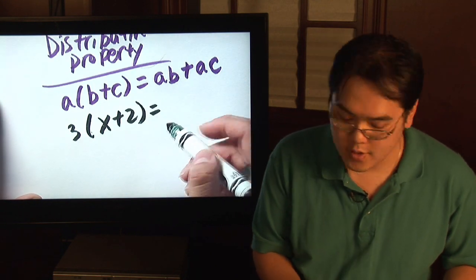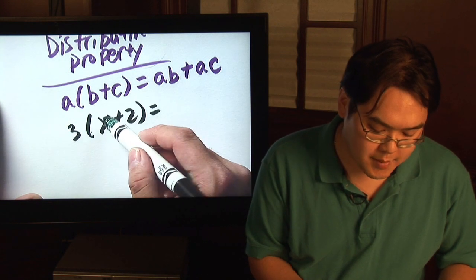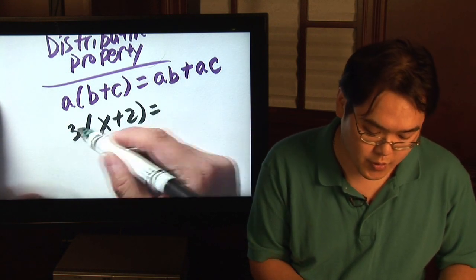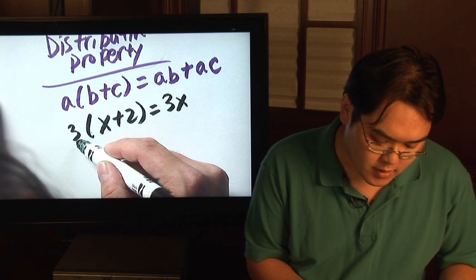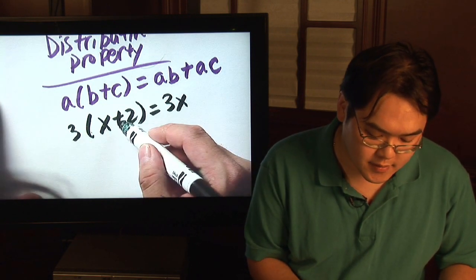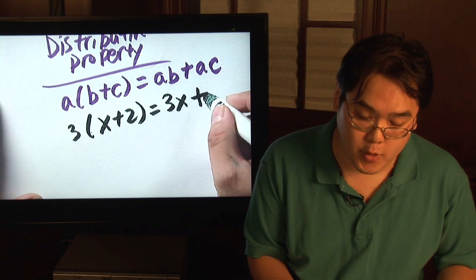So what that means here is 3 times x is what you do first. So 3 times x is 3x. And then because it's positive times a positive, we know that's going to be positive.